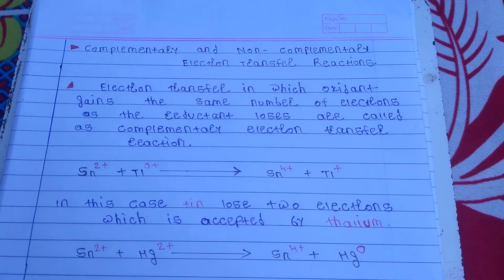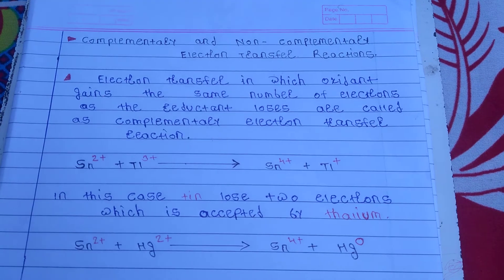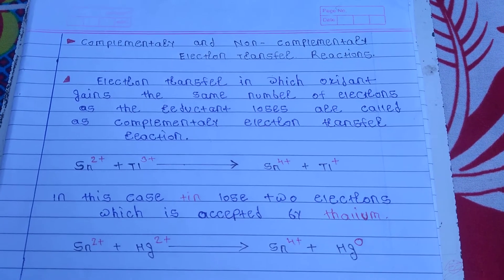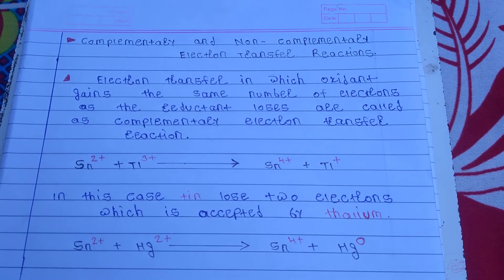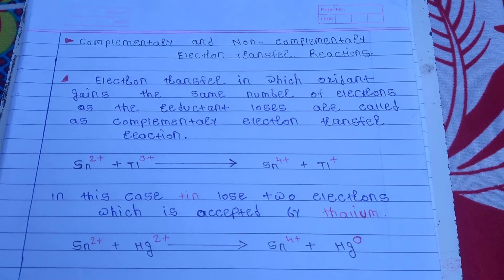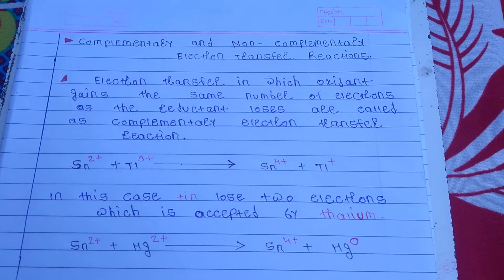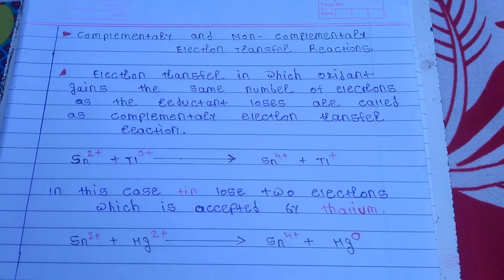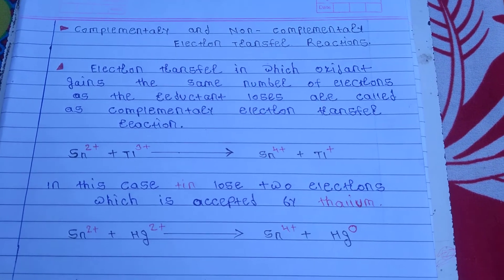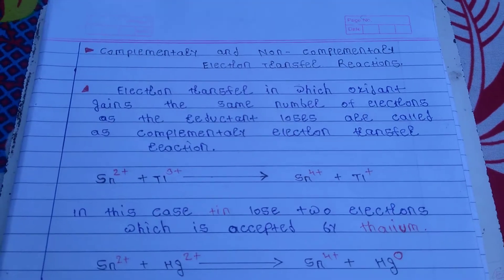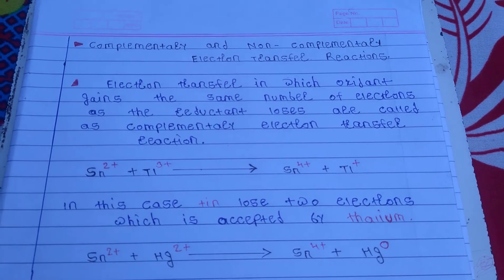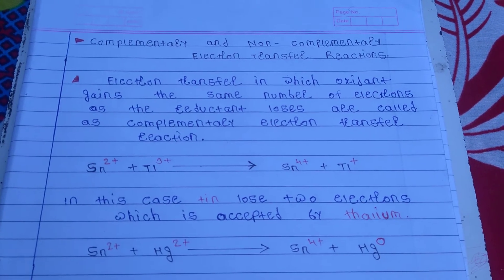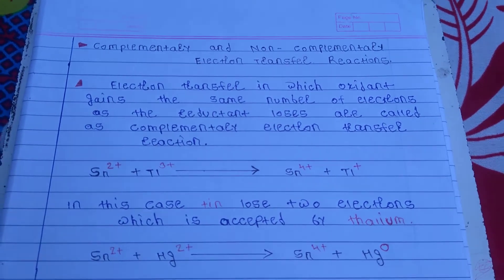This is called the complementary electron transfer reaction. For example, Sn²⁺ plus Tl³⁺ gets converted into Sn⁴⁺ plus Tl⁺. In this case, Tl loses two electrons which are accepted by the Sn. In complementary electron transfer reaction, the number of electrons lost and gained is the same.